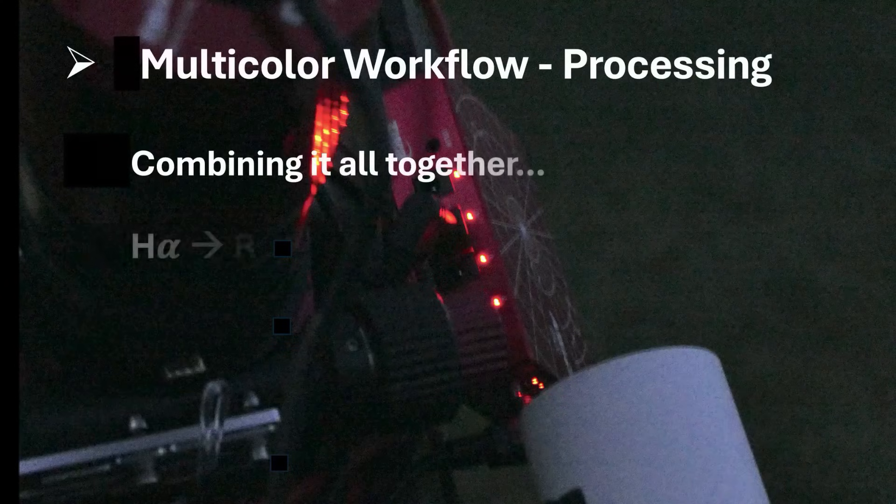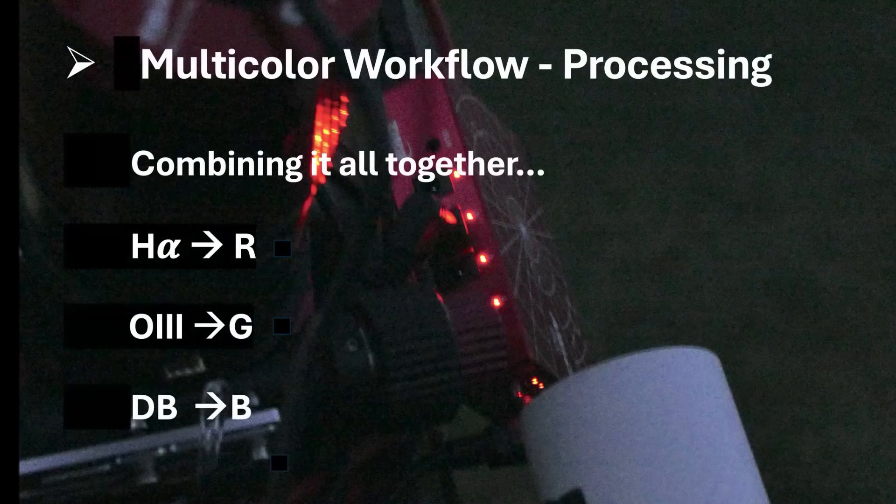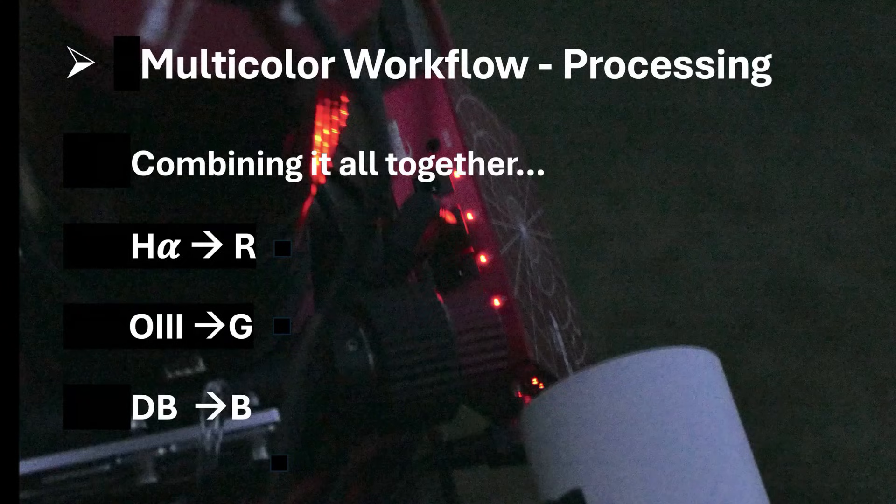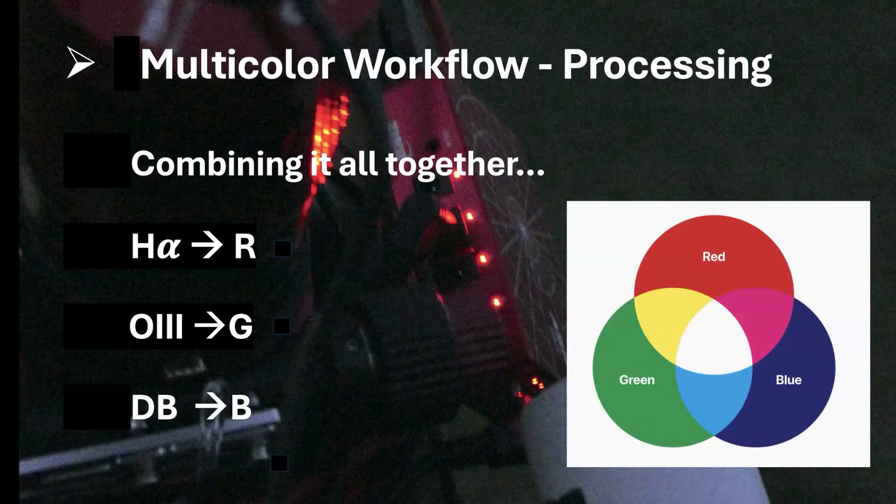Now we get into the multicolor workflow, and I'm combining this image together in a color model, where hydrogen alpha is mapped into red, oxygen 3 into green, and dark blue into blue. Now the question becomes, what do we do with the near-infrared?